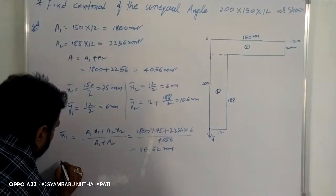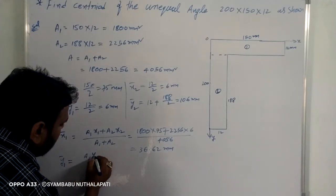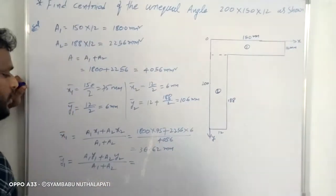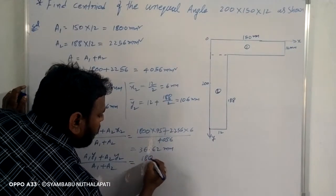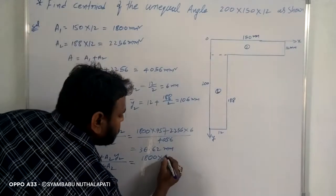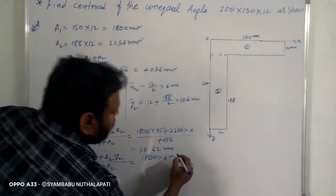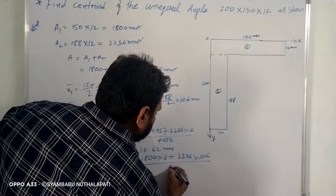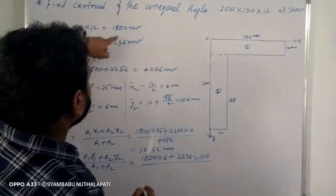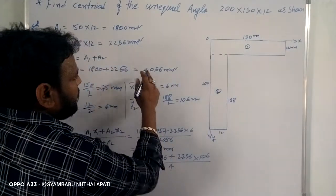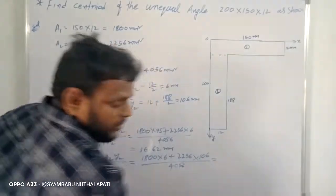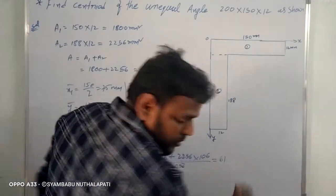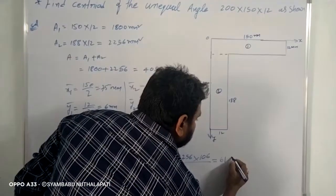y bar equals a1·y1 plus a2·y2, divided by a1 plus a2. A1 is 1800, a2 is 2256, y2 is 186. Divided by a1 plus a2, which is 1800 plus 2256, already found to be 4056. So y̅ is approximately 61.62.